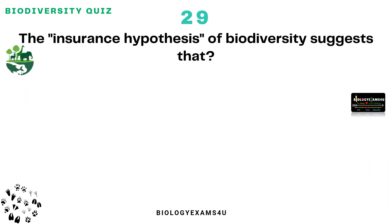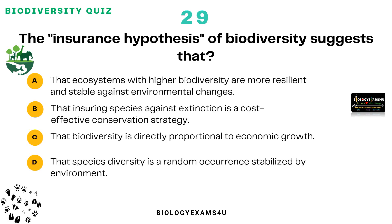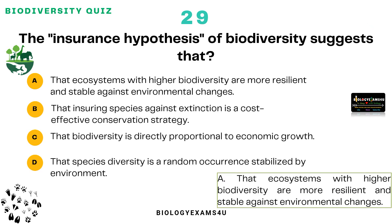Question number 29: The insurance hypothesis of biodiversity suggests that? Option A: Ecosystems with higher biodiversity are more resilient and stable against environmental changes. Option B: Insuring species against extinction is a cost-effective conservation strategy. Option C: Biodiversity is directly proportional to economic growth. Option D: Species diversity is a random occurrence, stabilized by environment. The correct answer is: the insurance hypothesis states that ecosystems with higher biodiversity are more resilient and stable against environmental changes.